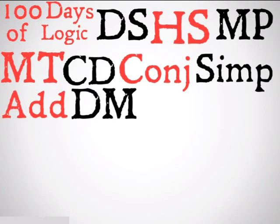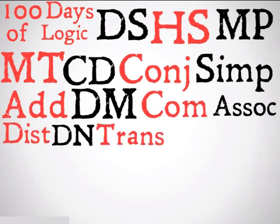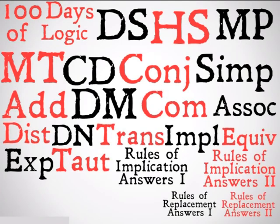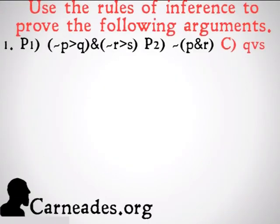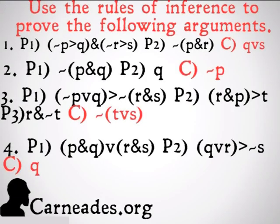We're going to represent double negation with DN. We have many more videos to come, but before we get there, we're going to take a look at a couple of problems and try to use the rules of inference we have learned so far — the rules of implication — as well as our new rules of replacement to go from the premises to the conclusion. In the next video, we're going to be covering the answers to these problems. Watch a new video every single day for 100 days here at carnades.org. Stay skeptical, everybody.